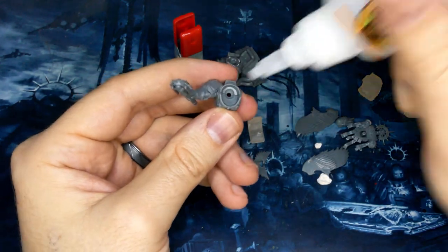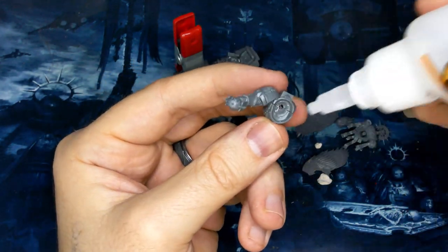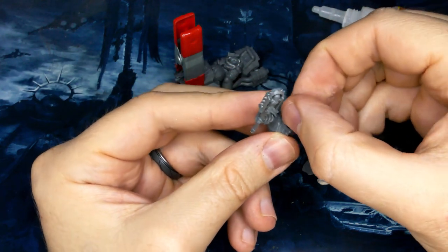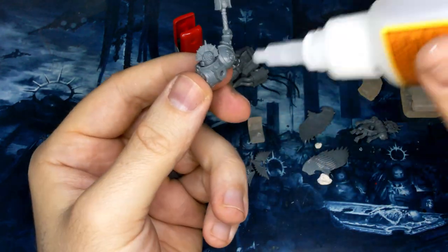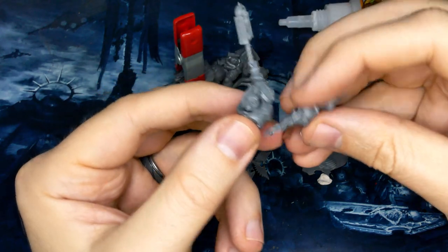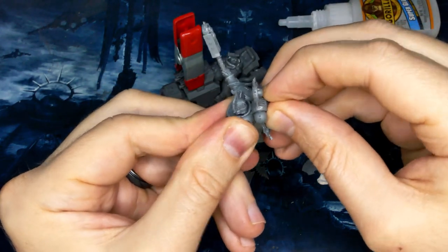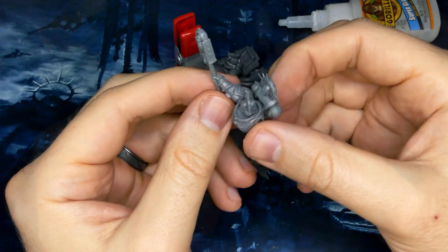You could wait to put the head on until after you've got the torso onto the bike and positioned, but for me, I knew his Crozius was already extended, and I just wanted to get that look and the feel of him looking at a target down the line of the Crozius. So I already knew where I wanted that head.